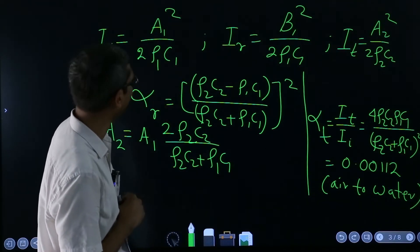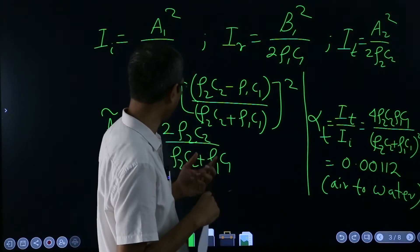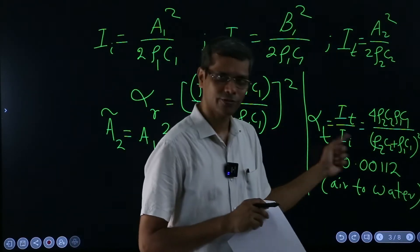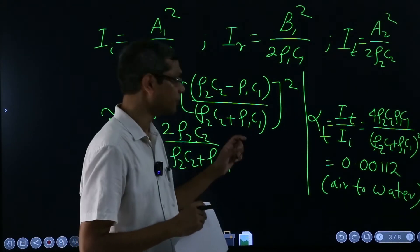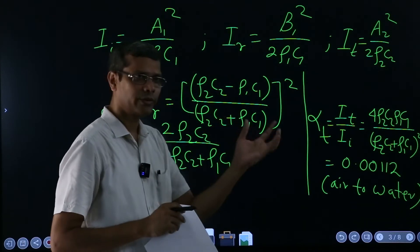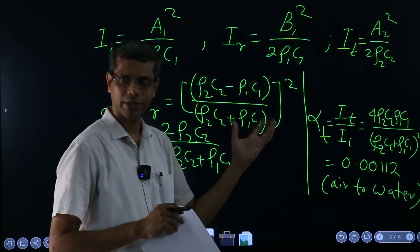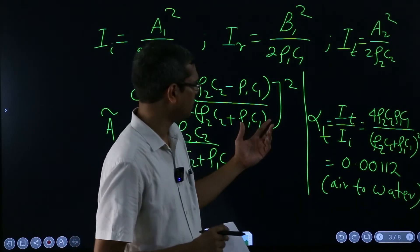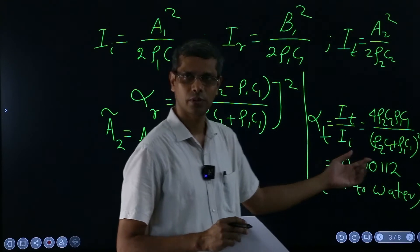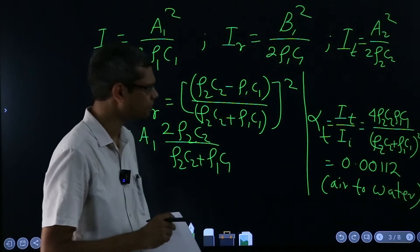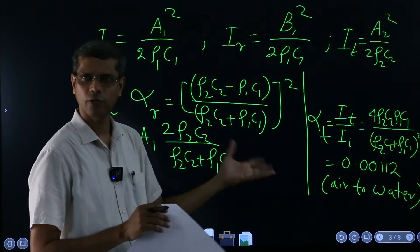In fact, if you see from the transmission perspective or even from the reflection perspective, because squares are involved, the energy transmission is same from either side. If you think in terms of, see that is the beauty of energy thinking, it was so difficult to talk about pressure and particle velocities when waves were coming from one side to the other, lot of different things were happening. But here, whether you use from water to air or air to water, these values will remain exactly same, right, neither this will change nor this will change because we are using the square. So that means the energy transmitted or reflected will be exactly the same whatever may be the case.